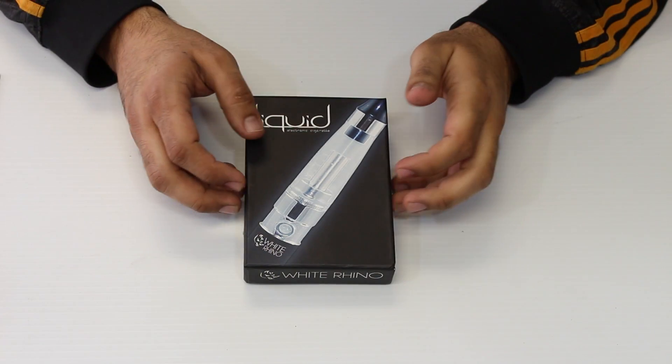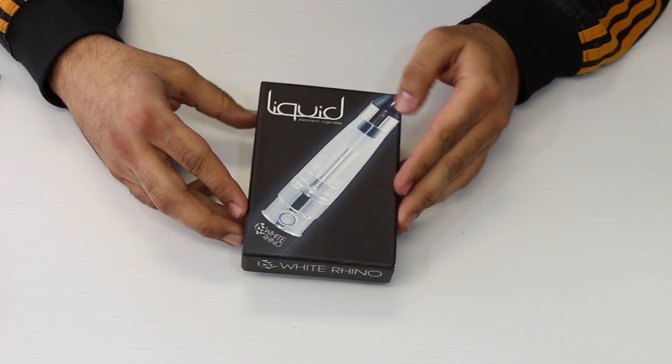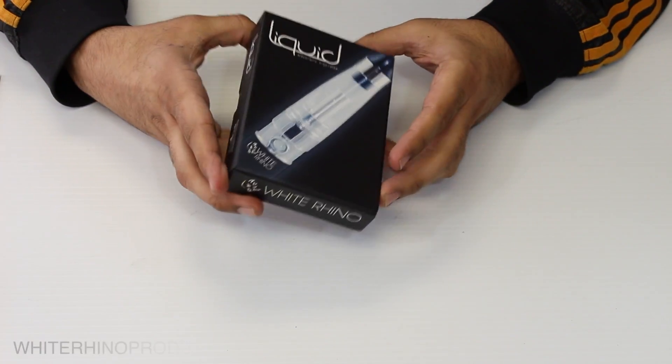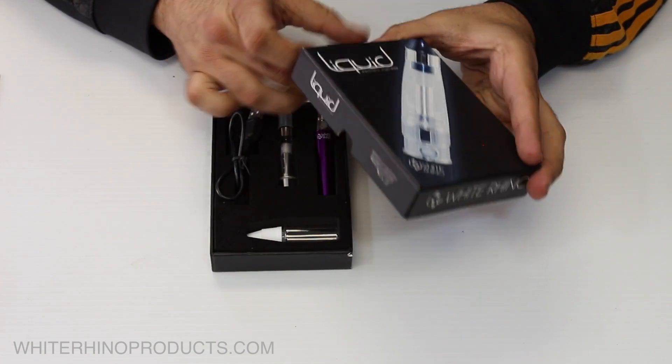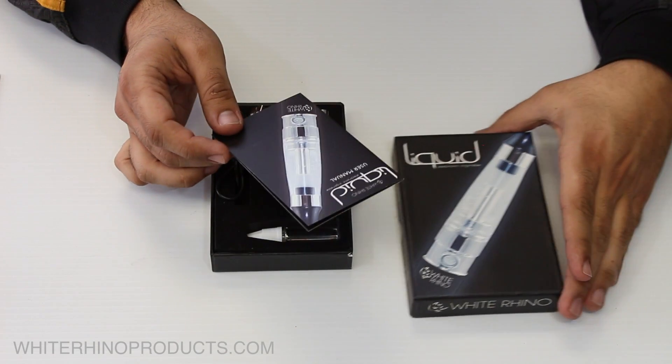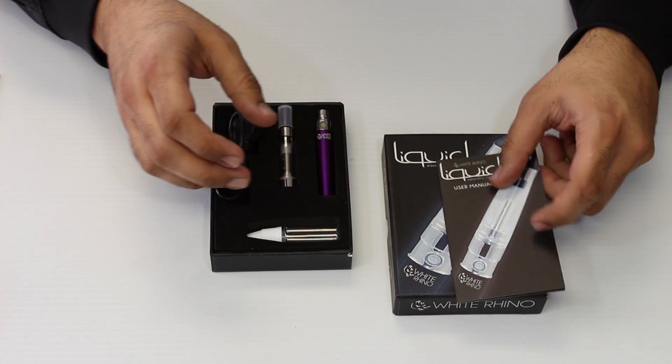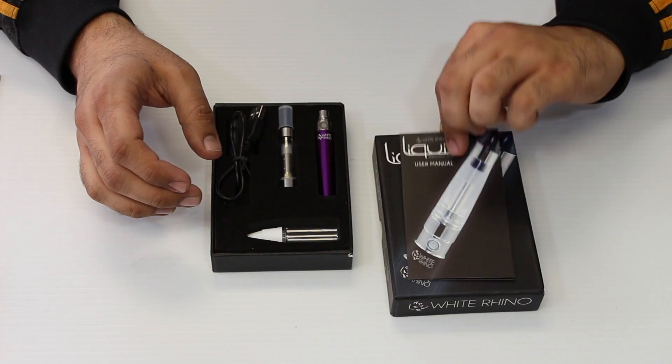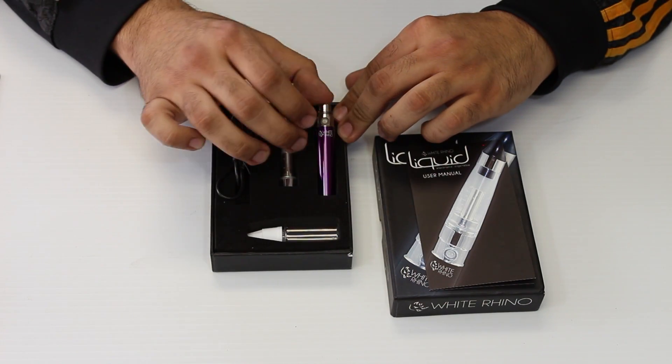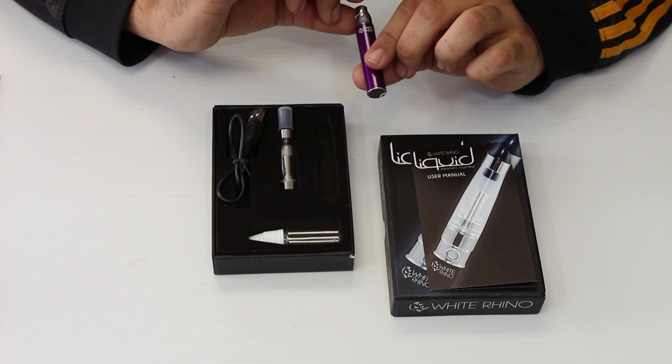Alright, here we have the White Rhino liquid vaporizer, also known as an electronic cigarette. Straight out of the box, let me go over what comes with your liquid vaporizer by White Rhino. Your user manual - I always recommend reading this first before getting started. It does come with a battery.